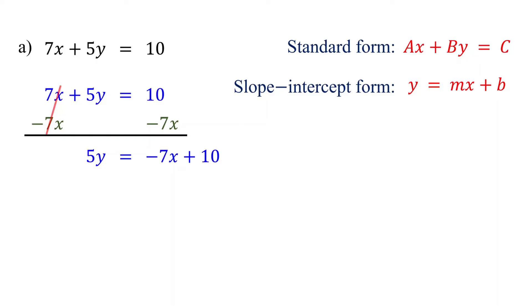Again, notice that in slope-intercept form, the y-variable is by itself. So, our next step is to isolate y. We do this by dividing both sides by the coefficient of y. Remember to divide every term in the equation. These cancel out, leaving y by itself. 10 divided by 5 is 2. Now, the equation is in slope-intercept form.